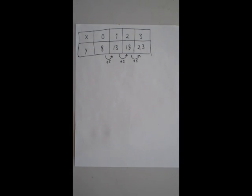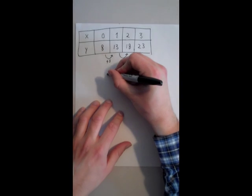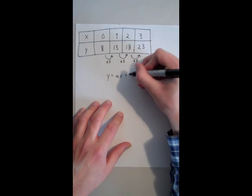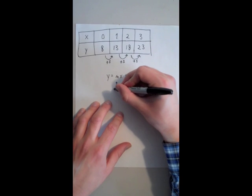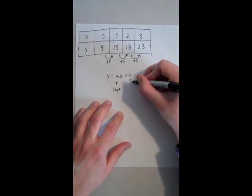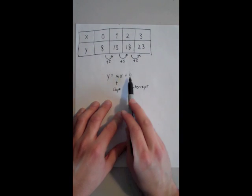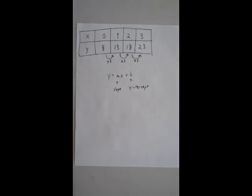And the simplest way to write a linear equation is in slope-intercept form. So that's y equals mx plus b, where m is the slope, and b is the y-intercept. So all you have to do is find out what m is and what b are, and then we're done with this problem. It's that easy.